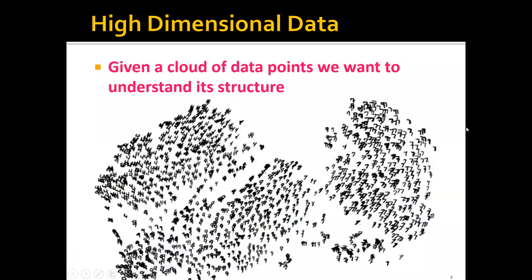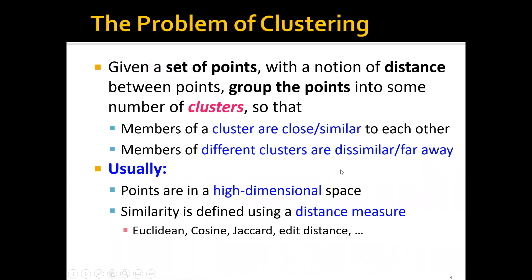So what is clustering and why do we need it? Usually we're given a cloud of data points, and we may want to understand its structure. One way to do this is by grouping them into clusters. Formally, the problem of clustering can be formulated as: given a set of points with a notion of distance between the points, we want to group the points into some number of clusters such that members of a cluster are close or similar to each other, and members of different clusters are dissimilar or far away from each other.